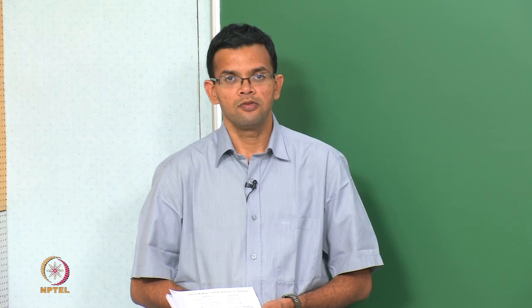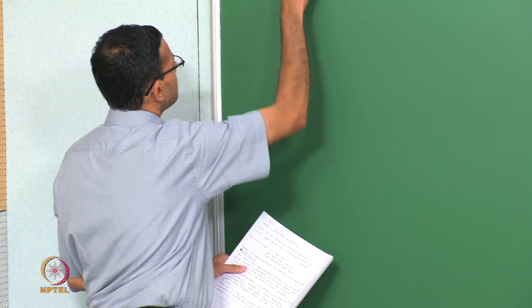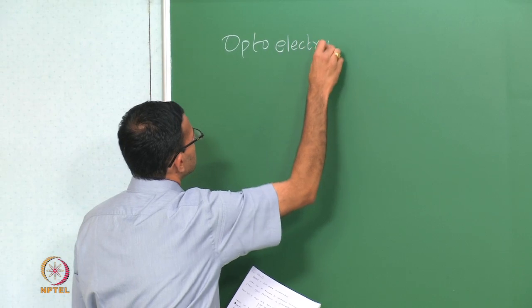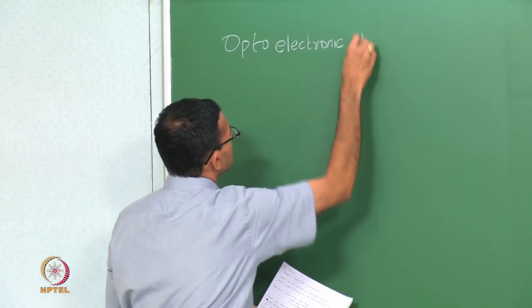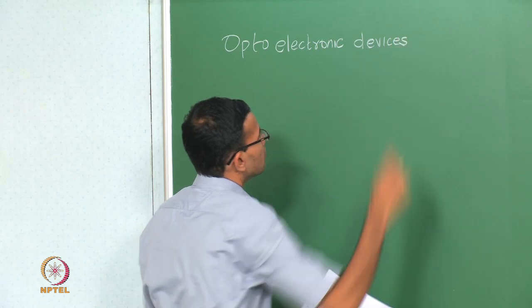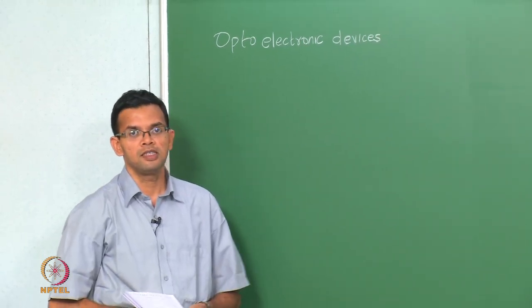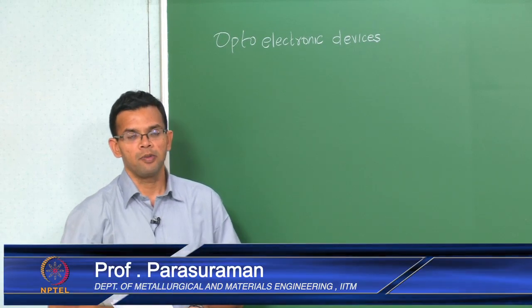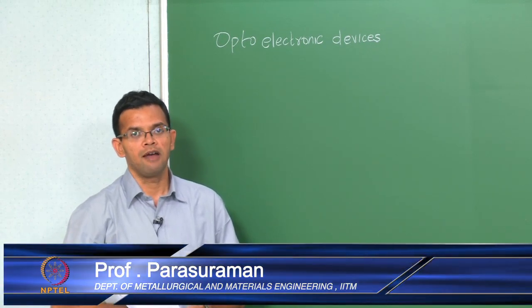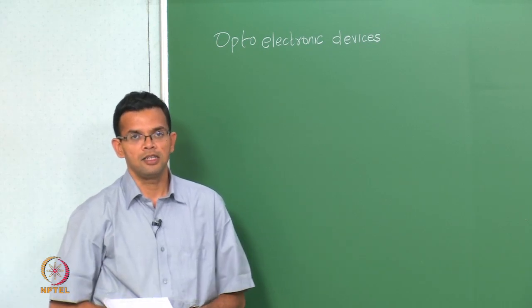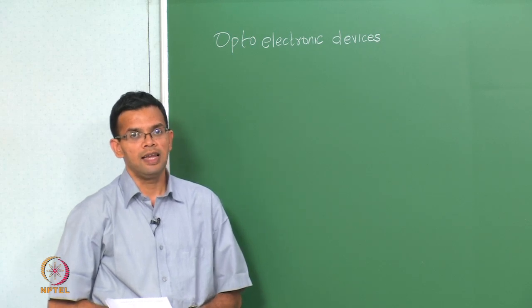Let us start with a brief review of last class. For the last couple of classes we have been looking at optoelectronic devices. These are devices where there is an interaction between incident light and the electrical properties of the material, or you have a situation where electrons and holes recombine in order to give you a light output. Last class we looked at LEDs or light emitting diodes.